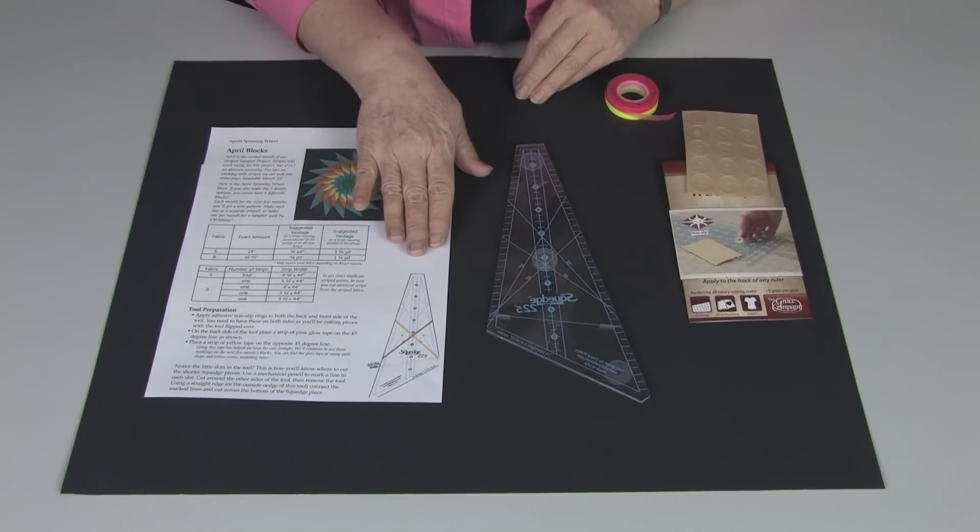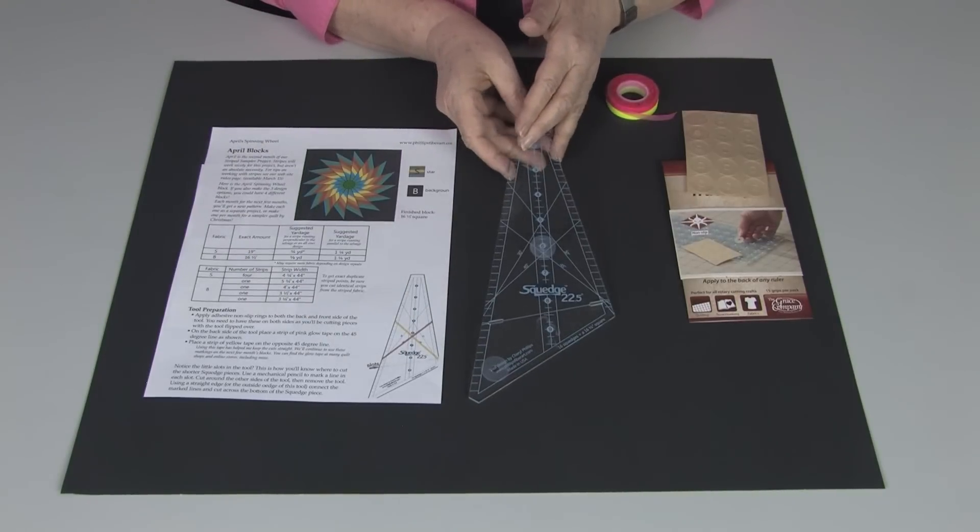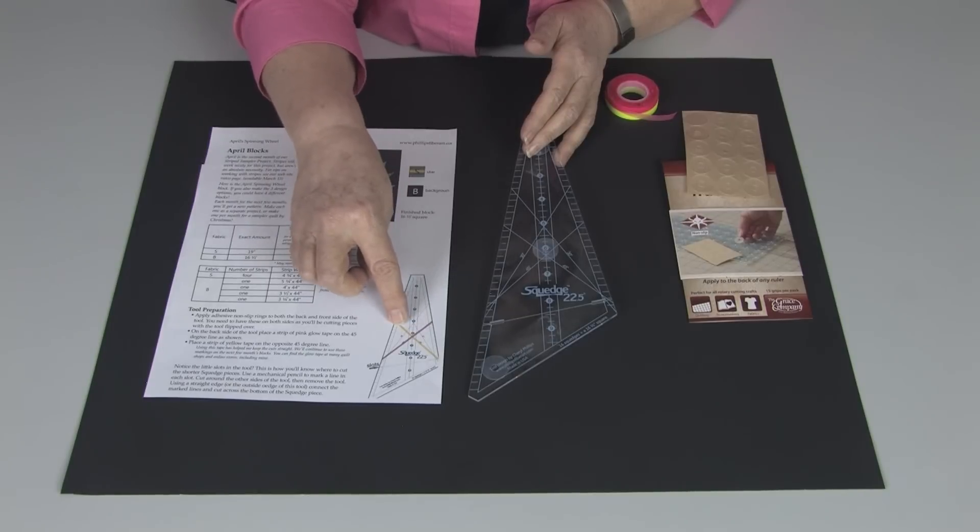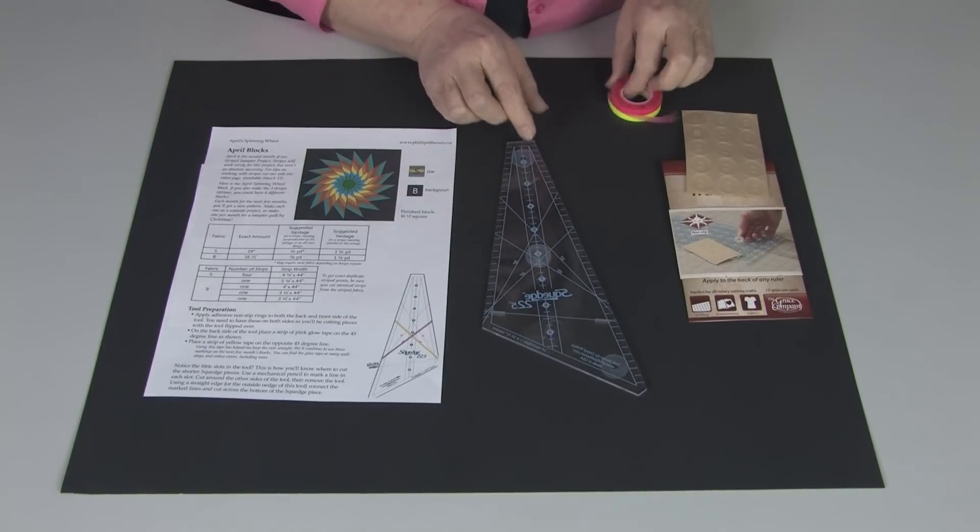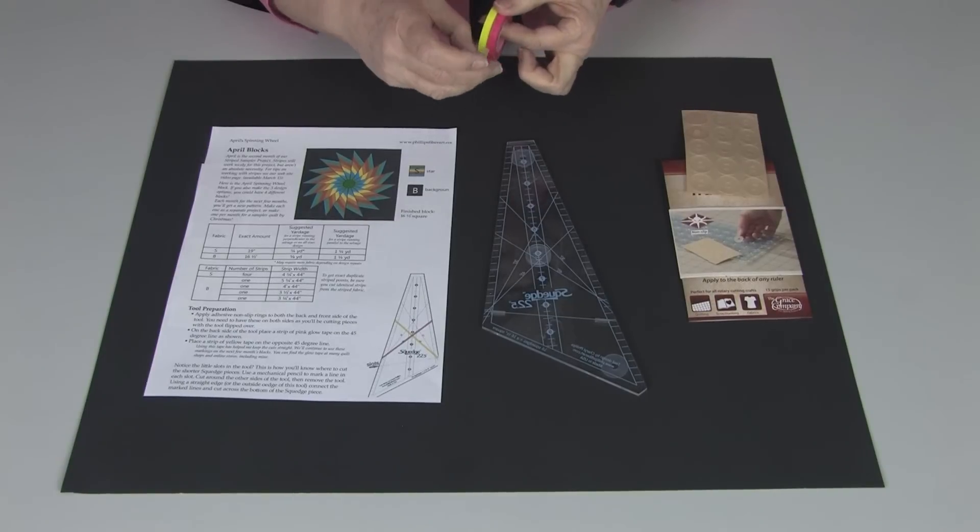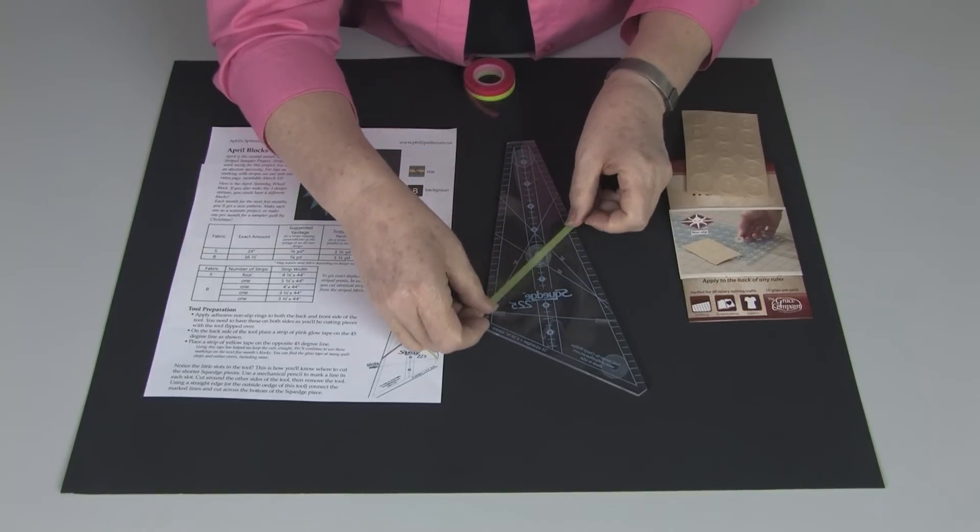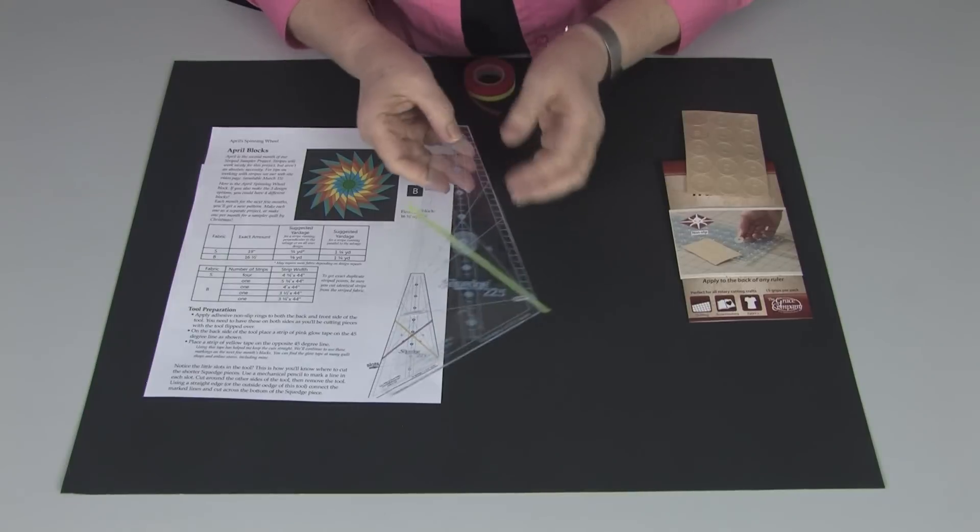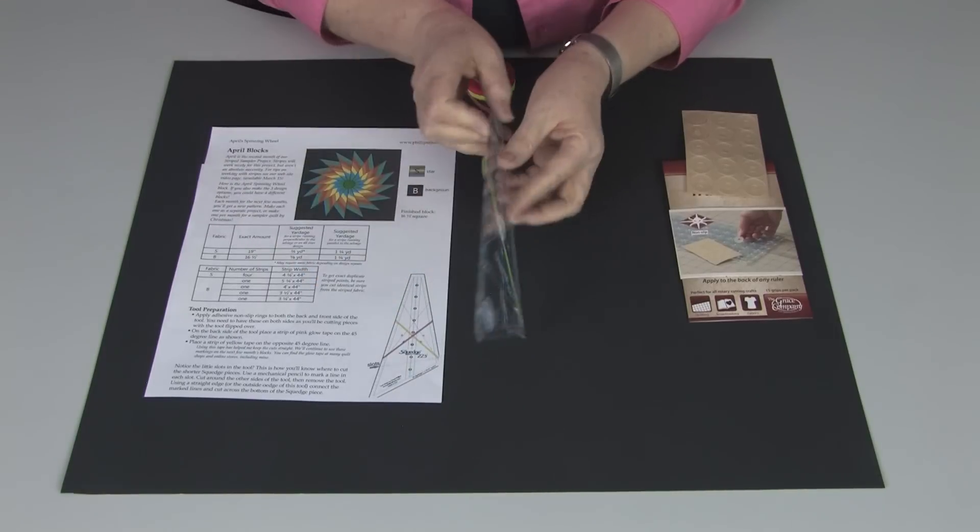Next, you'll see that on the first page of our pattern, there's a graphic of the squedge tool. And it has pink and yellow lines. These lines in different colors is what's going to make this block so easy to do. To mark those lines, I'm going to use glow tape. This glow tape is a transparent, non-adhesive tape. And I will put this directly over my 45 degree line. I'll turn my tool over.